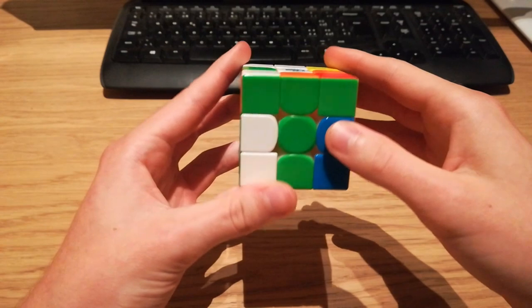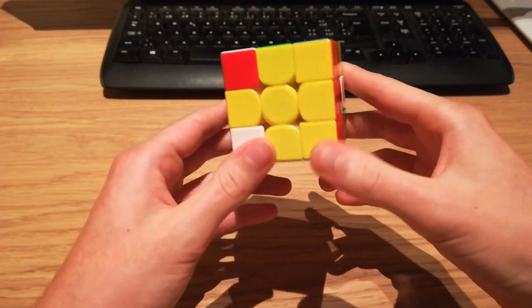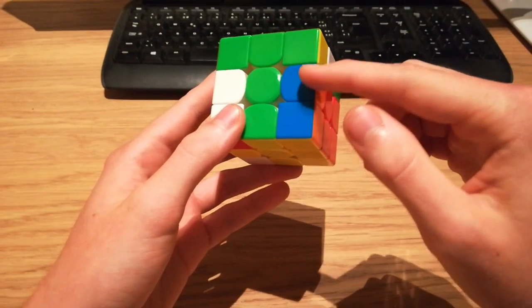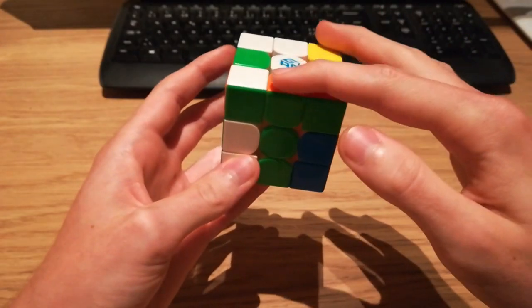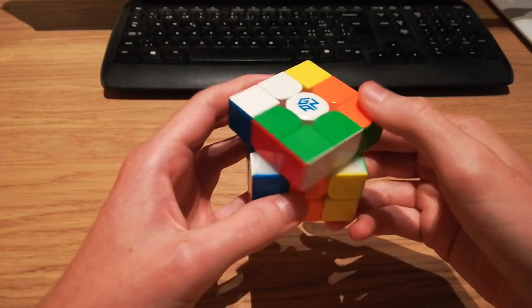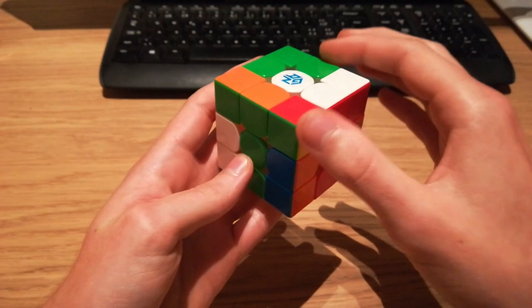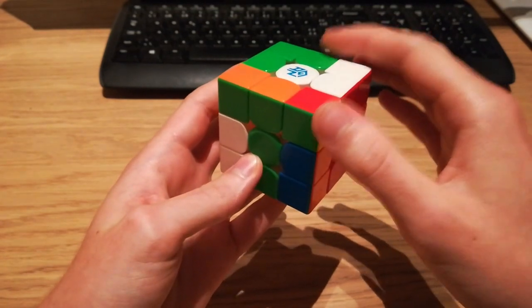So now that we have successfully solved our yellow cross and built our first F2L pair, we can see that the next three F2Ls are very nicely set up. Because if we just do these three moves it would pair up this F2L and set up this F2L into a very nice three move insert.